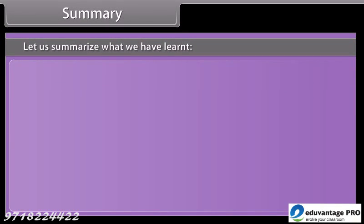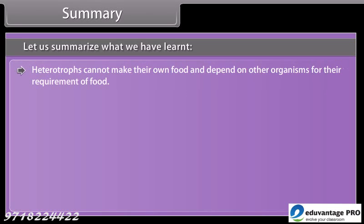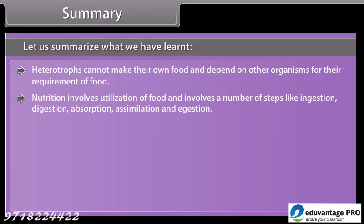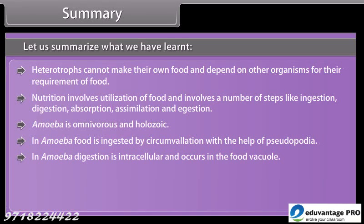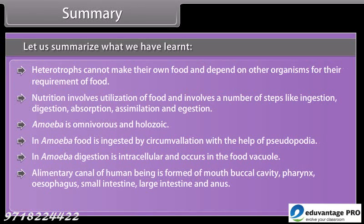Let us summarize what we have learned. Heterotrophs cannot make their own food and depend on other organisms for their food. Nutrition involves utilization of food and includes steps like ingestion, digestion, absorption, assimilation, and egestion. In amoeba, food is ingested by circumvallation with the help of pseudopodia, and digestion is intracellular, occurring in the food vacuole. The alimentary canal of human beings is formed of mouth, buccal cavity, pharynx, esophagus, small intestine, large intestine, and anus.